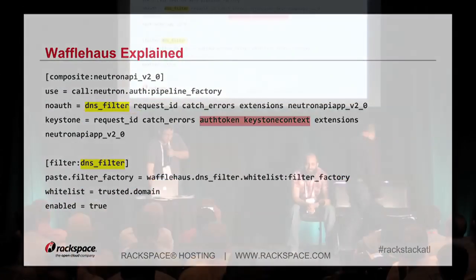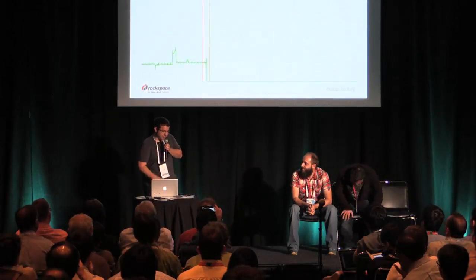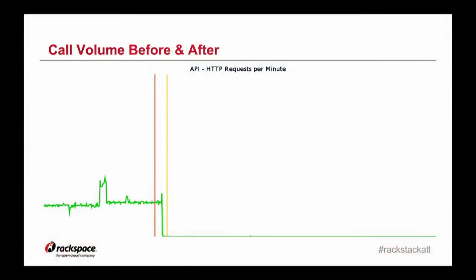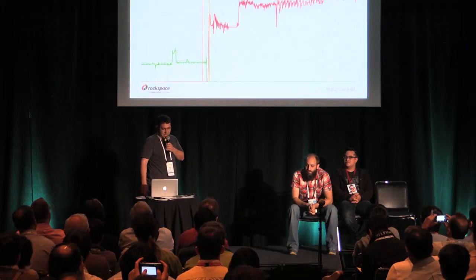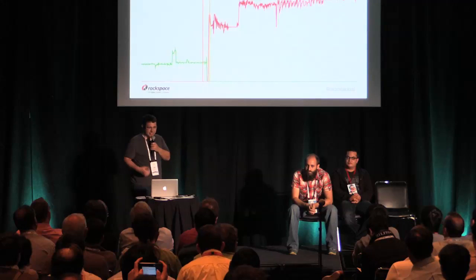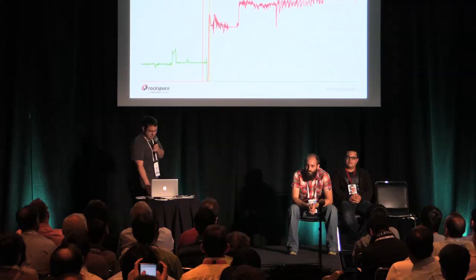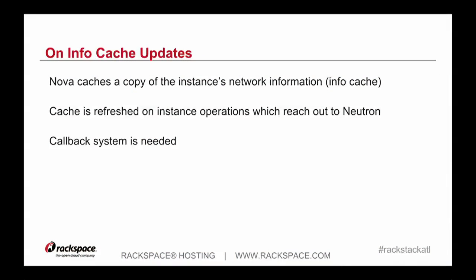Here's a picture of one of our deployment nights. The green is the call volume pre-deployment, the two vertical bars are the start and finish of the deployment, and the red is the number of calls to Neutron after deployment. We had nearly tripled the call volume just by turning Neutron on. This was a big problem — our API workers were overloaded. So we had to dig deep down and see where all this was coming from. And it turns out it's the infocache updates from Nova — almost 100% of these requests are those infocache calls.